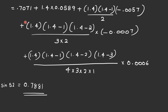Substituting values: sin(52°) ≈ 0.7071 + 1.4×0.0589 + 1.4×(1.4-1)×(-0.0057)/2 + 1.4×(1.4-1)×(1.4-2)×(-0.0007)/6 + 1.4×(1.4-1)×(1.4-2)×(1.4-3)/24×0.0006 = 0.7881.